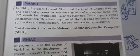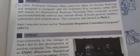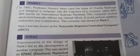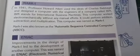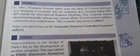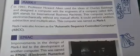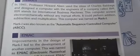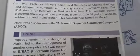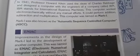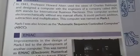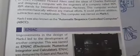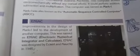In 1941, Professor Howard Aiken worked on the idea and design of a computer with IBM — International Business Machines. The computer could perform different types of operations such as addition, subtraction, and multiplication.